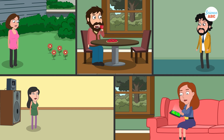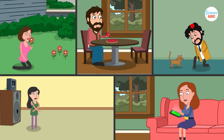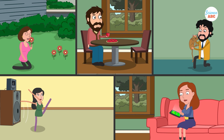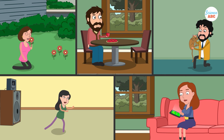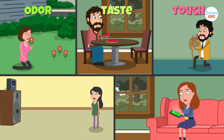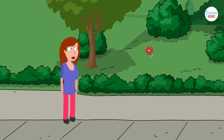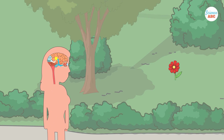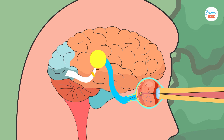In our sense organs, these nerve impulses are caused in response to a sensation, such as odor, taste, touch, sound, or light. For example, in the eye, a nerve impulse is generated in response to light reaching the cells of the retina, which are then passed on through the optic nerve to the part of the brain that processes visual information.